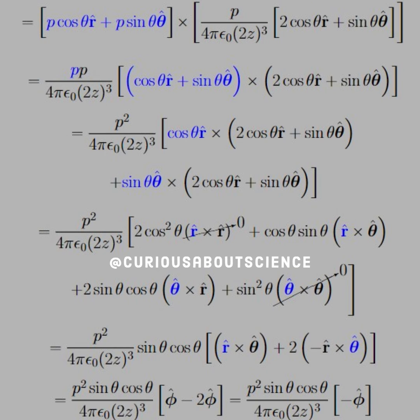Again, we factored out the scalar sine and cosine, and we're left with R hat cross theta hat plus two minus R hat cross theta hat, and let's recall that in spherical coordinates, R hat cross theta hat equals phi hat. And the rest simplifies down.